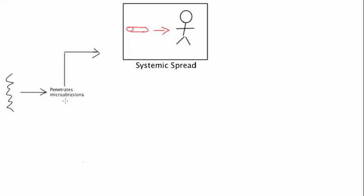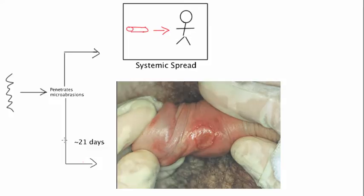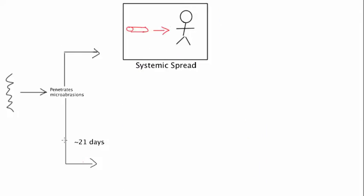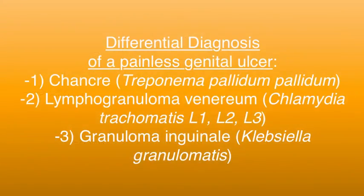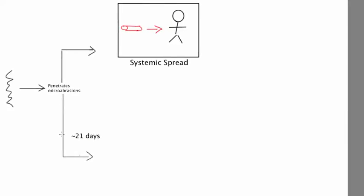At the site of inoculation, about 21 days after infection, you start to form a chancre. On physical exam, a chancre is a painless, usually singular, raised, red, hardened lesion with a cartilaginous rim around the edges — like a pizza pie, tomato red with a raised pie crust edge. It's very important to keep in mind that a chancre is painless, because the differential diagnosis of a painless genital ulcer is short, and many individuals don't bother to see a doctor.